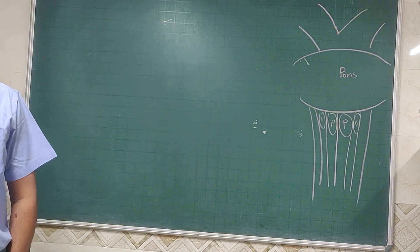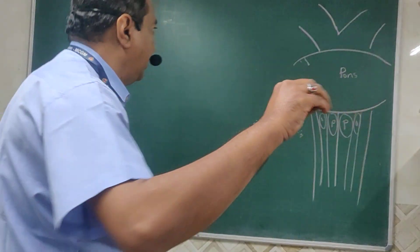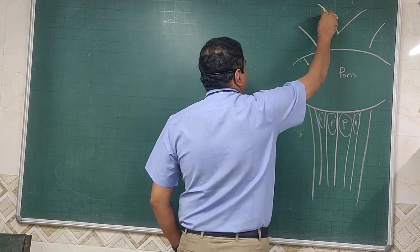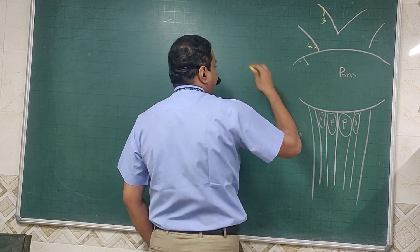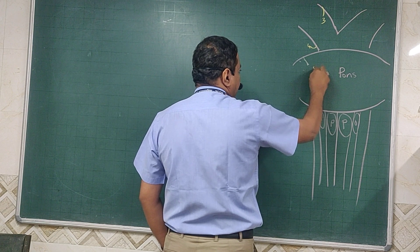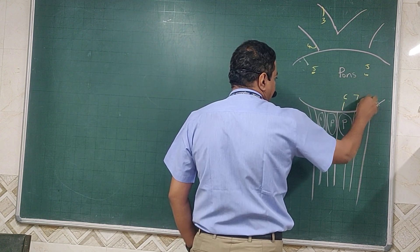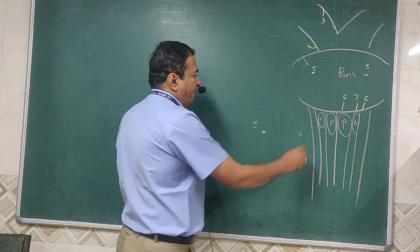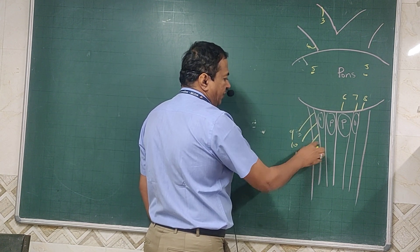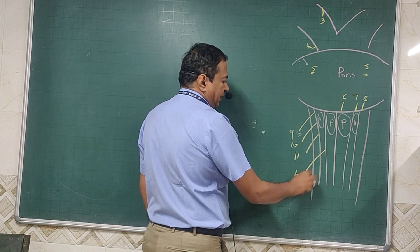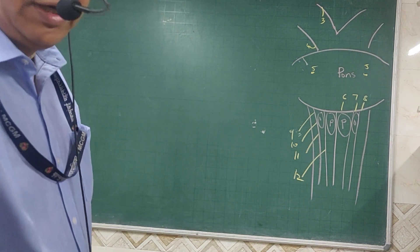This is how the brainstem looks from the anterior aspect. The cranial nerves which take origin from the brainstem are as follows: the third nerve takes origin from the side of the crus, the fourth nerve goes posteriorly, fifth nerve from the pons, sixth, seventh, and eighth from the junction of pons and medulla, ninth, tenth, eleventh from the posterolateral fissure, and twelfth from the anterolateral fissure.